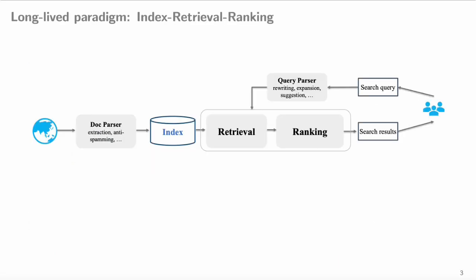Most existing information retrieval methods follow a pipeline paradigm, which includes multiple components such as document parser, query parser, index, retrieval modules, and ranking modules.